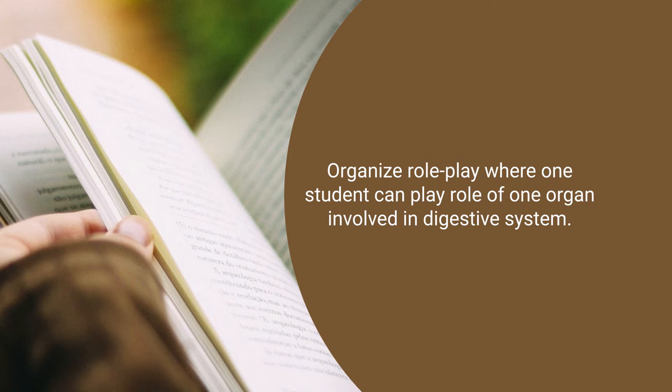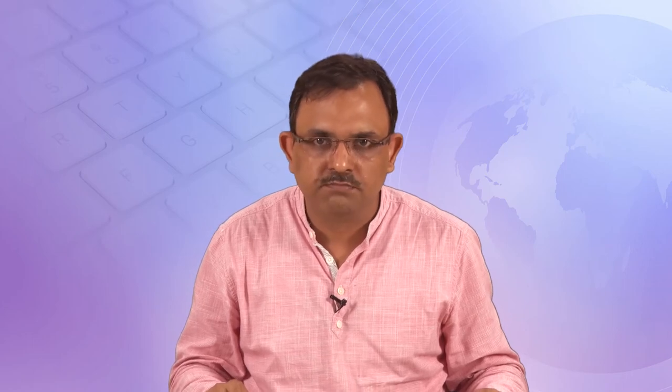Or you can organize a role play in your class where one student plays the role of one organ — they study everything about that organ: what it is, where it is located, what enzyme or juice it secretes, and its function. Then in the sequence of the digestive system, each student comes to the front and says 'I am the stomach, what I do... I am the small intestine, what I do... I am the liver, what I do... I am the pancreas, what I do.' This can be a very good activity.